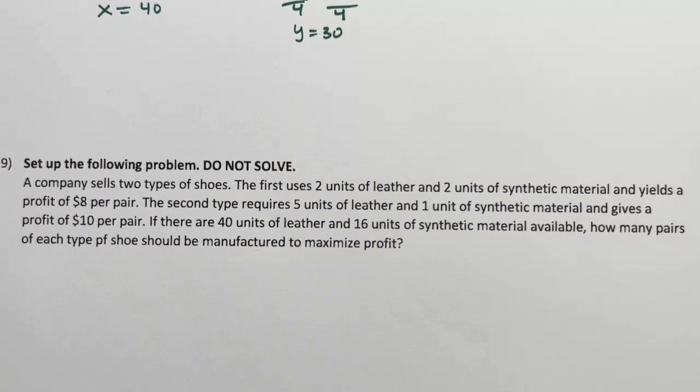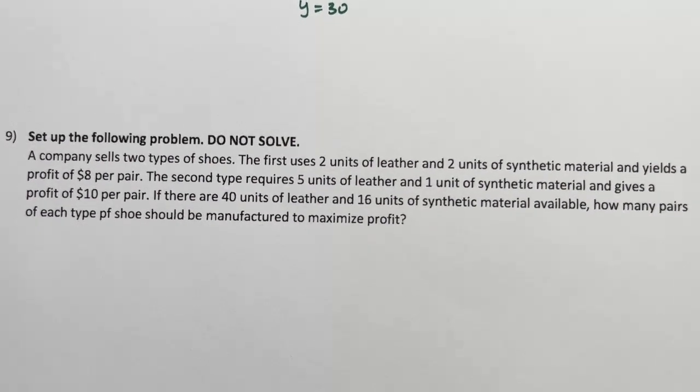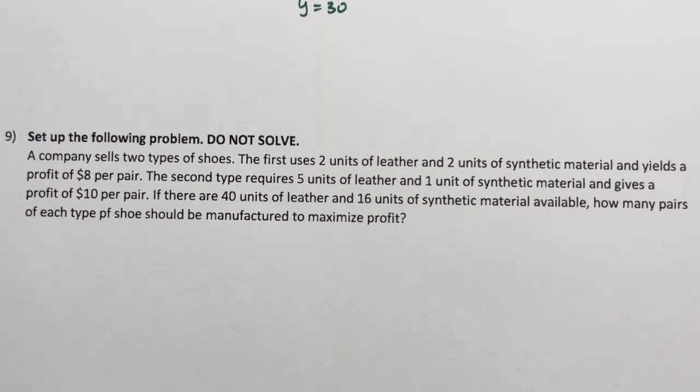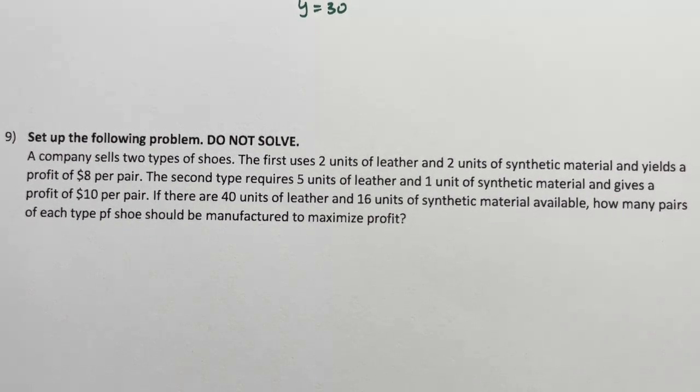Set up. A company sells two types of shoes. The first uses two units of leather, two units of synthetic material, and yields a profit of $8 per pair. The second requires five units of leather, one unit of synthetic material, and gives a profit of $10 per pair.